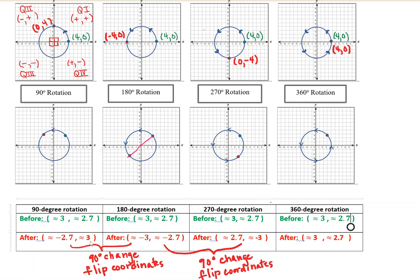Compare the 90-degree and 180-degree stopping points — the difference between them is a 90-degree change. What we find is that for each 90 degrees we travel, the coordinates always flip their positions. Our x becomes our y, and our y becomes our x — and that happens for every 90 degrees we travel.